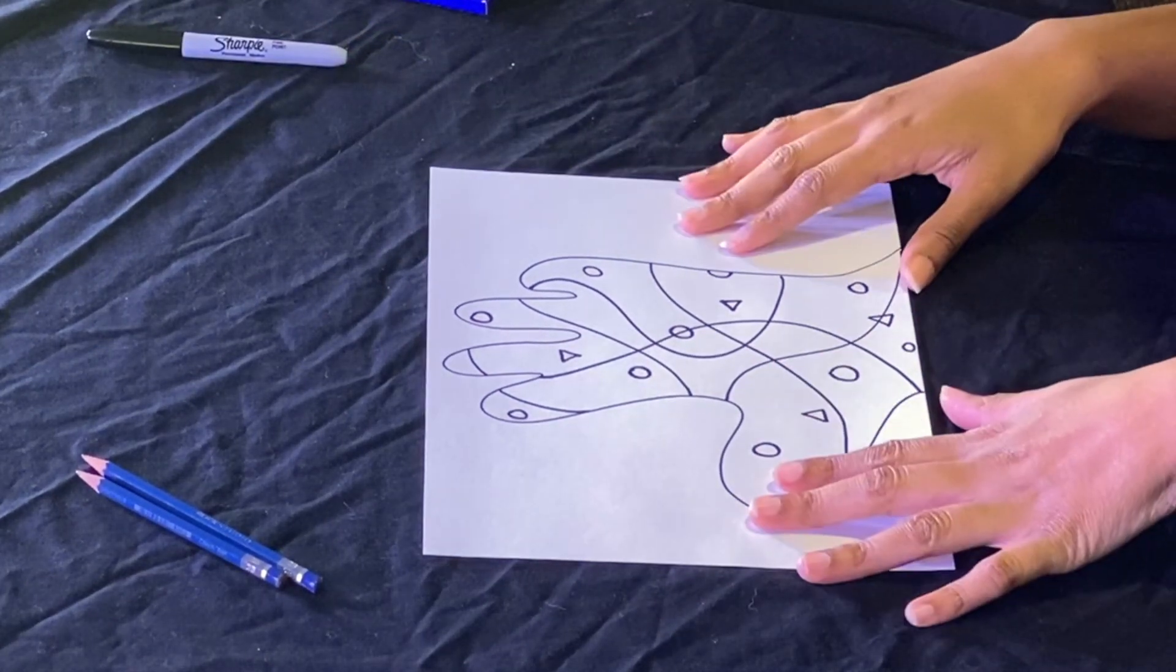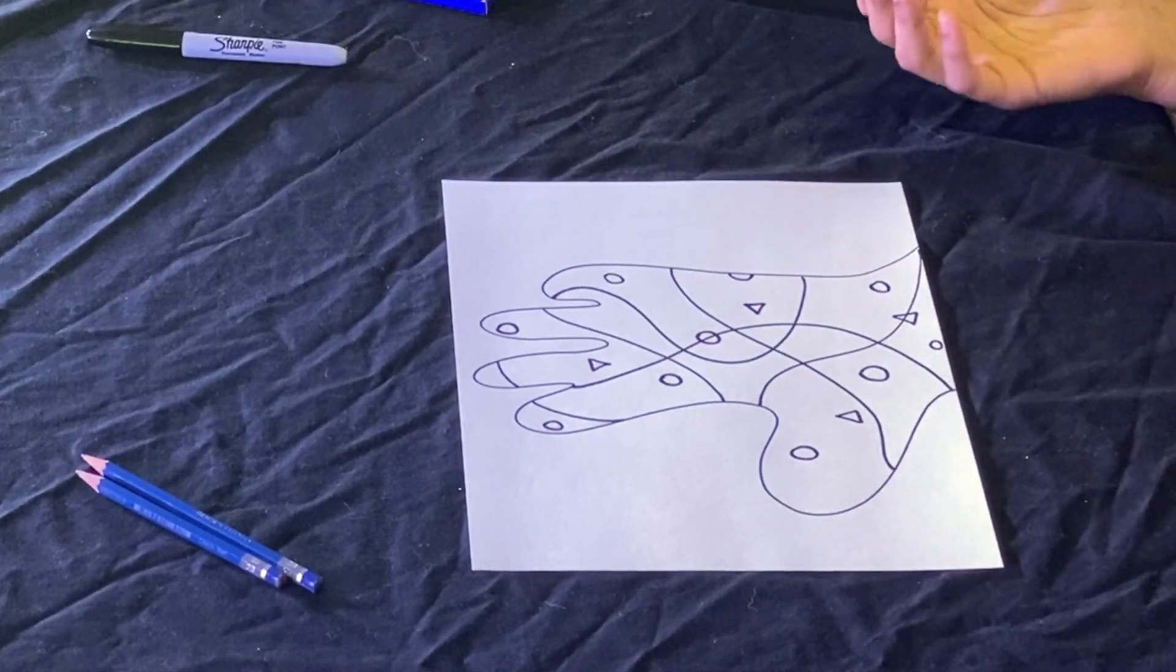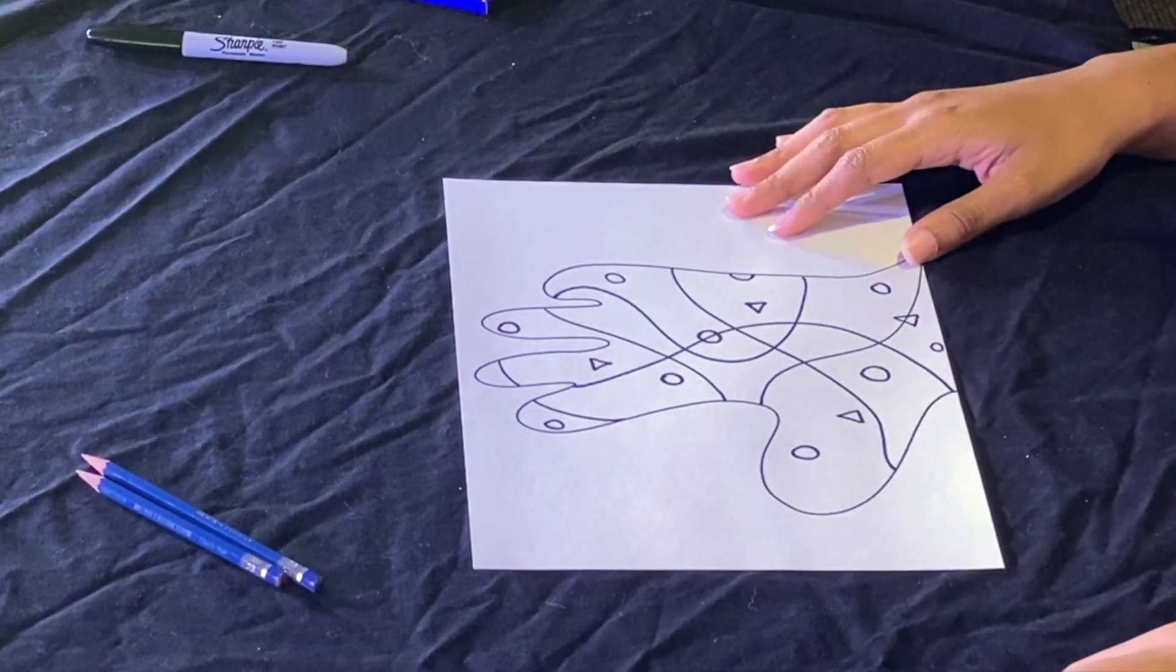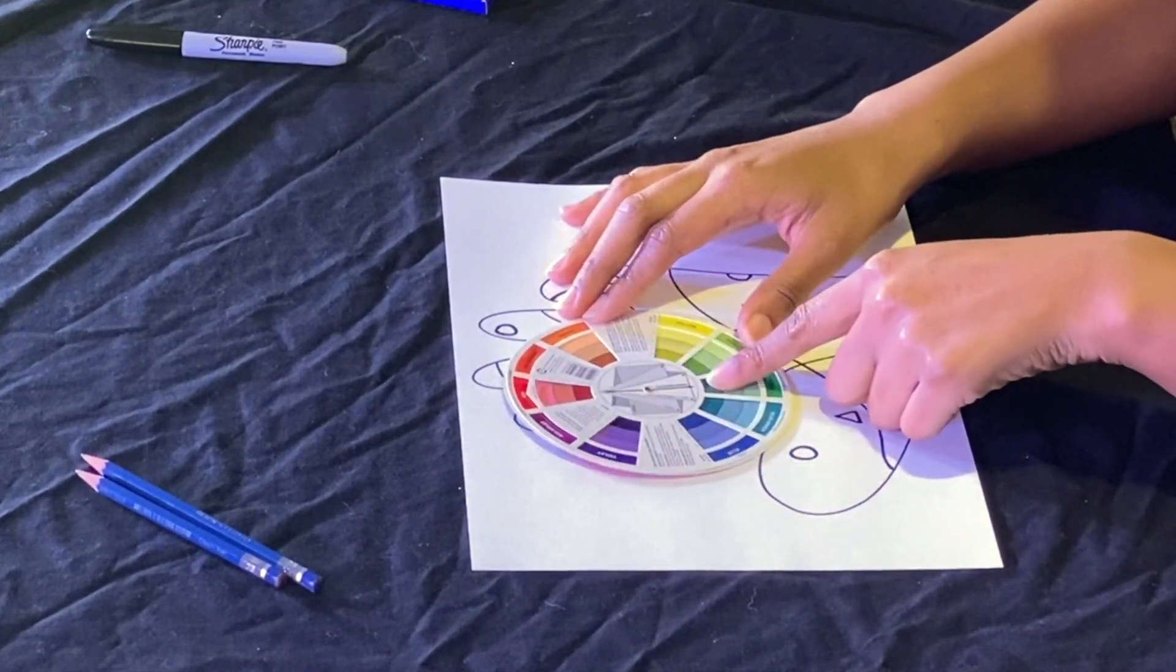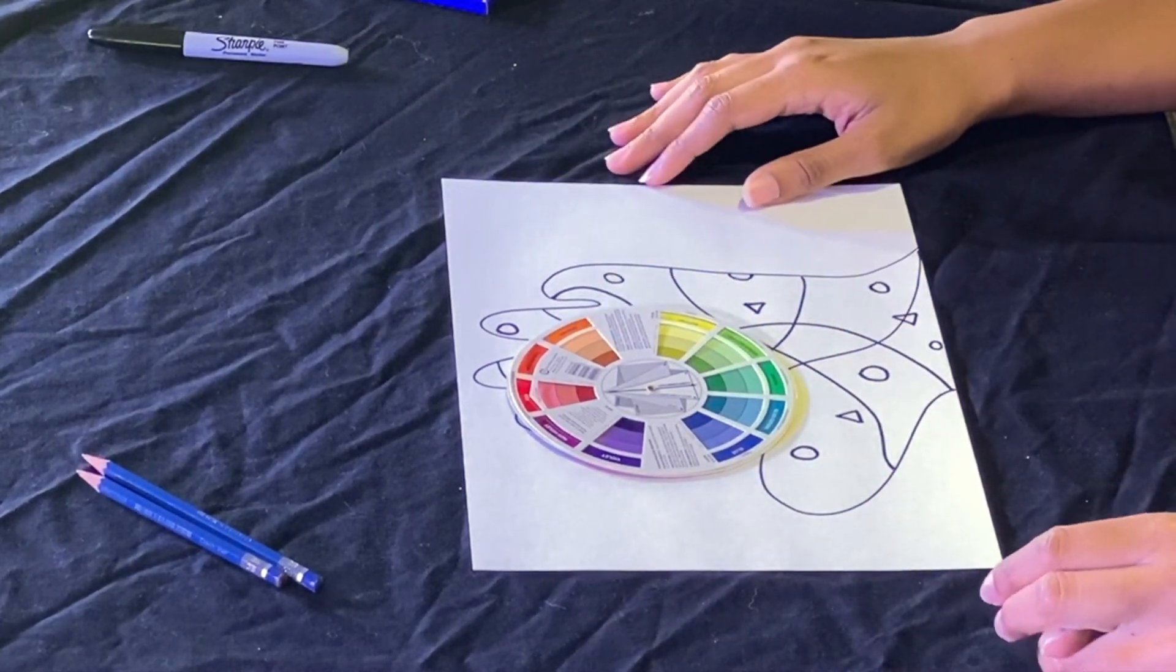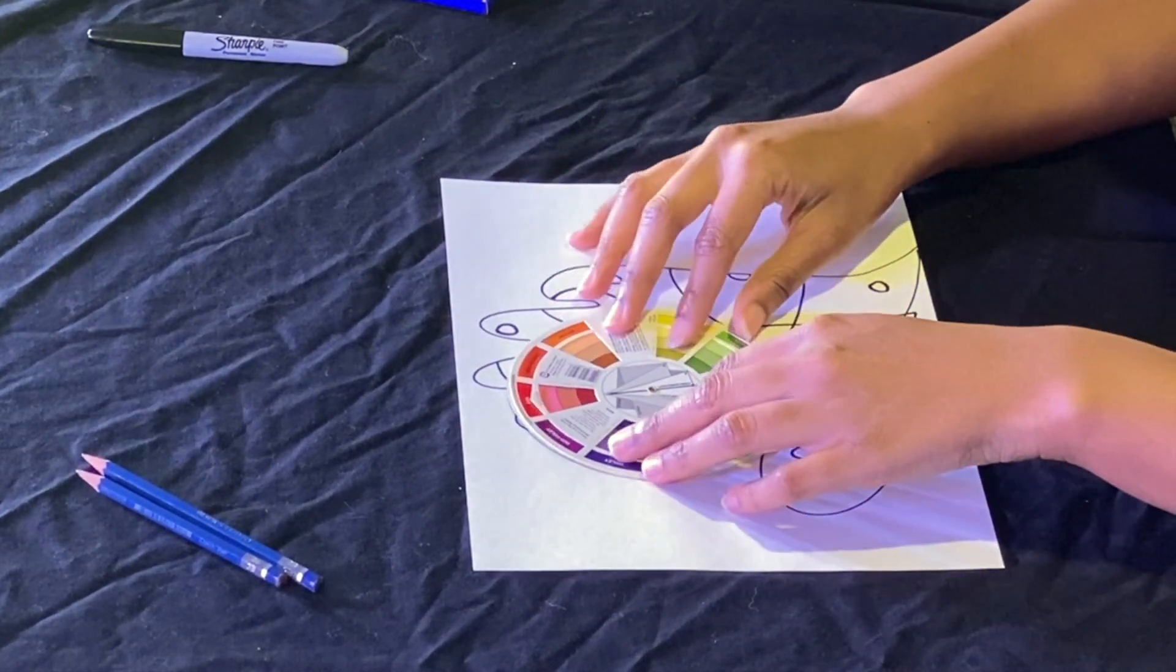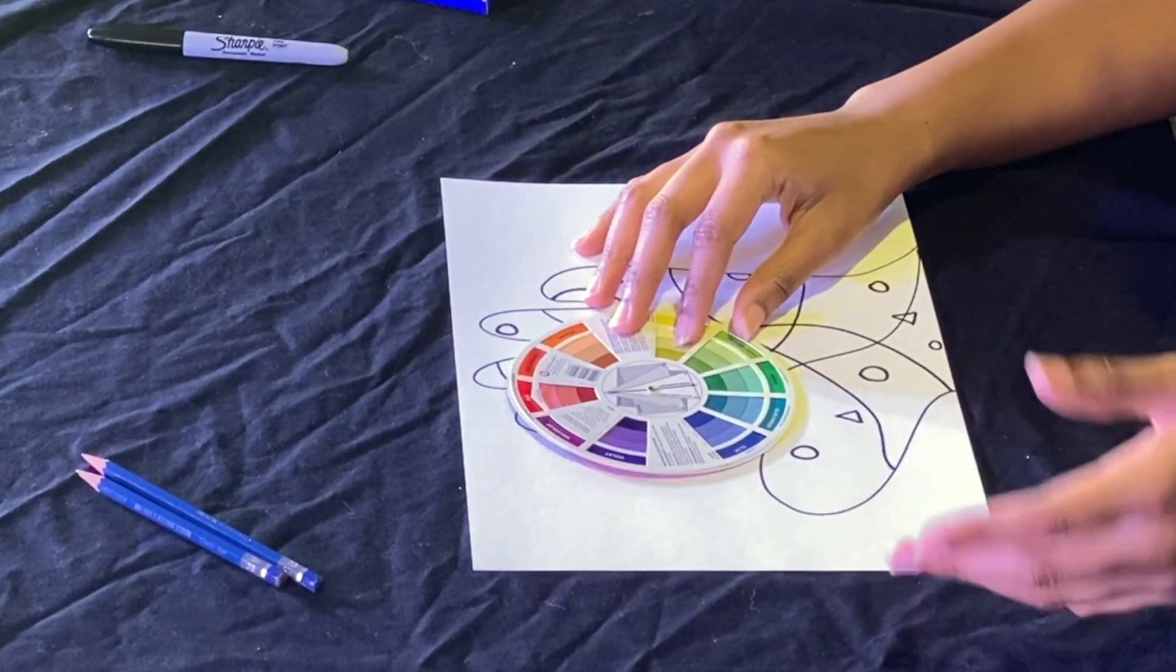Okay. So before we dive into this and start coloring it, I'm going to teach you guys about complementary colors. Complementary colors, if you look on a color wheel, they are the colors that are across from each other. So there are six basic pairs of complementary colors, two of those being in each pair, of course.